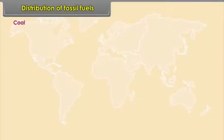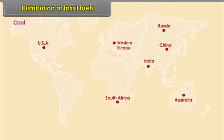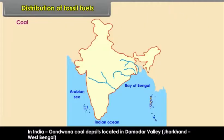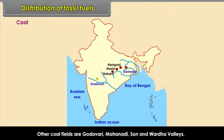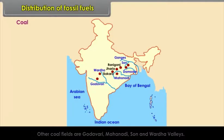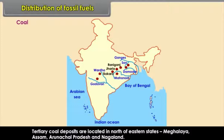Coal world distribution: Russia, USA, China, Australia, parts of Western Europe, South Africa and India. In India, Gondwana coal deposits are located in Damodar Valley, Jharkhand and West Bengal. Important coal fields are Jharia, Raniganj and Bokaro. Other coal fields are Godavari, Mahanadi, Son and Wardha Valleys. Tertiary coal deposits are located in Northeastern states: Meghalaya, Assam, Arunachal Pradesh and Nagaland.